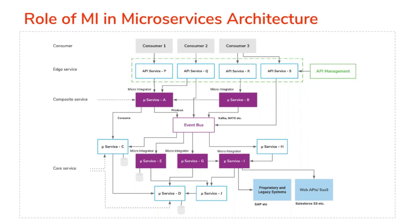In a typical microservices architecture, you have a collection of microservices for specific tasks that communicate with lightweight mechanisms like HTTP. Since we have multiple services developed by different teams, there can be different technologies and communication mechanisms involved. Even in a microservices architecture, we still have the integration problem. You can use the Micro Integrator to develop different integration solutions and deploy them as a composite service in your microservices architecture, applying all EIP patterns and newer patterns like choreography, with extensive connector support.